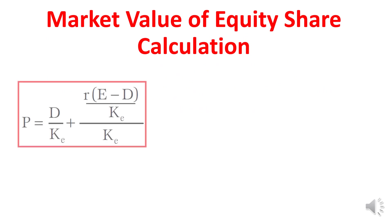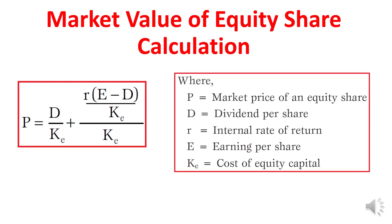We will now understand the formula. P equals D divided by KE, plus R divided by KE multiplied by (E minus D) divided by KE. Here, P is the market price of the equity share, D is dividend per share, R is the internal rate of return earned by the company, E is earnings per share, and KE is the cost of equity capital.